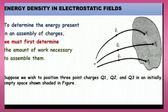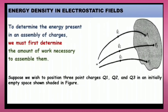The main objective in this topic is to bring different point charges from infinity distance to a particular area. As shown in the figure, we are supposed to bring charges q1, q2, and q3 from infinity to points p1, p2, and p3. In order to determine the energy present in an assembly of charges, we must first determine the amount of work necessary to assemble them. Suppose we wish to position three point charges q1, q2, and q3 from infinity into empty space.